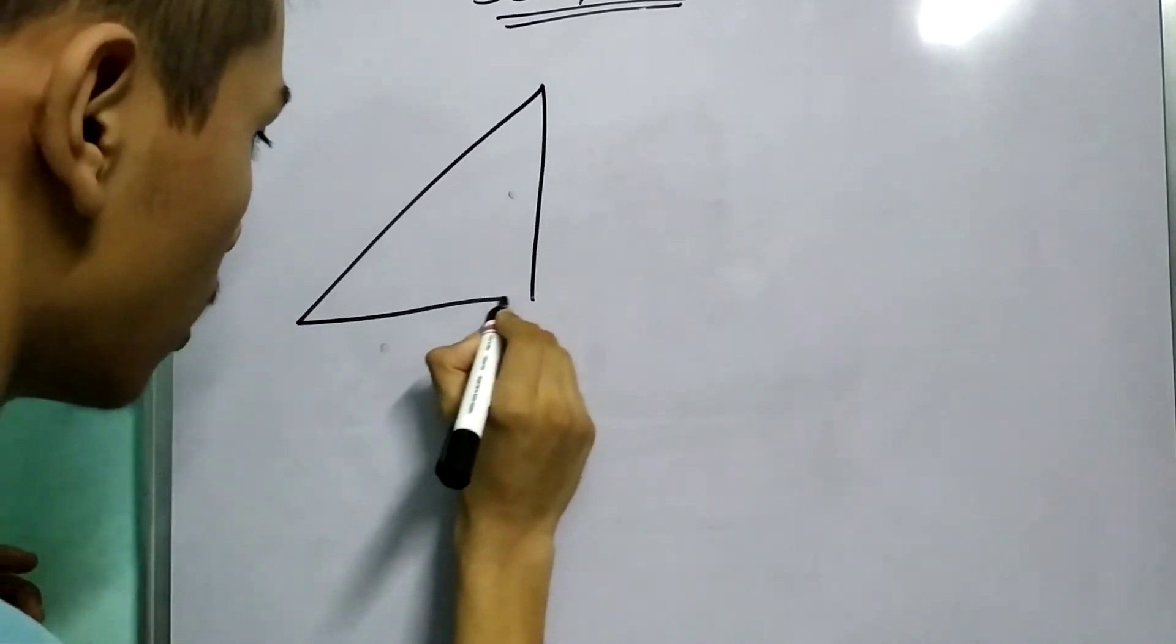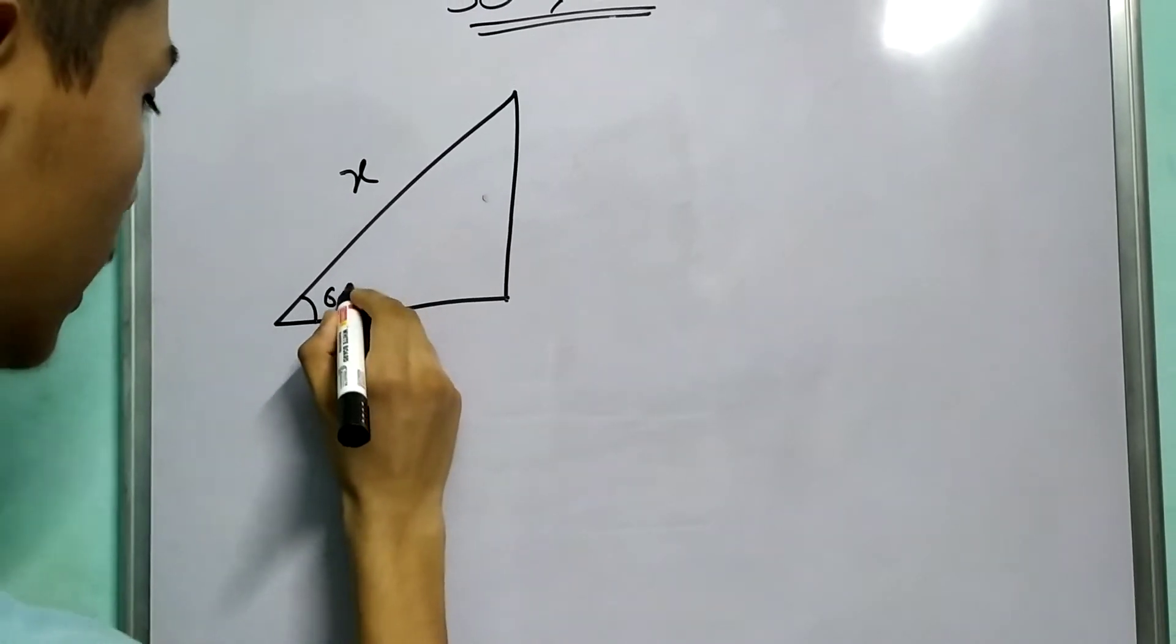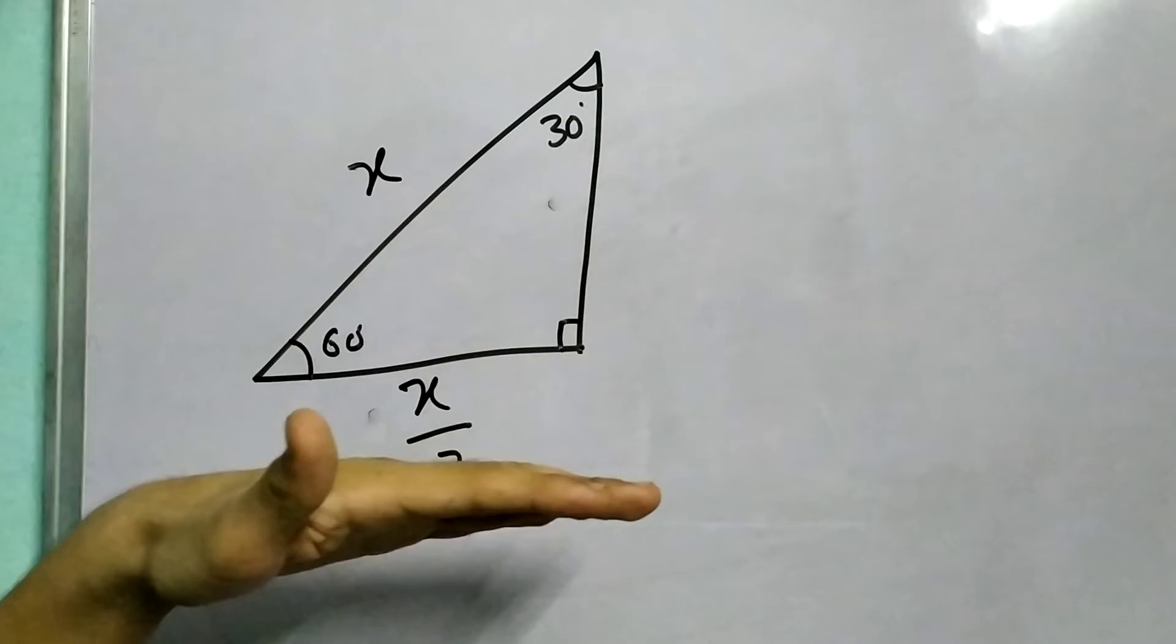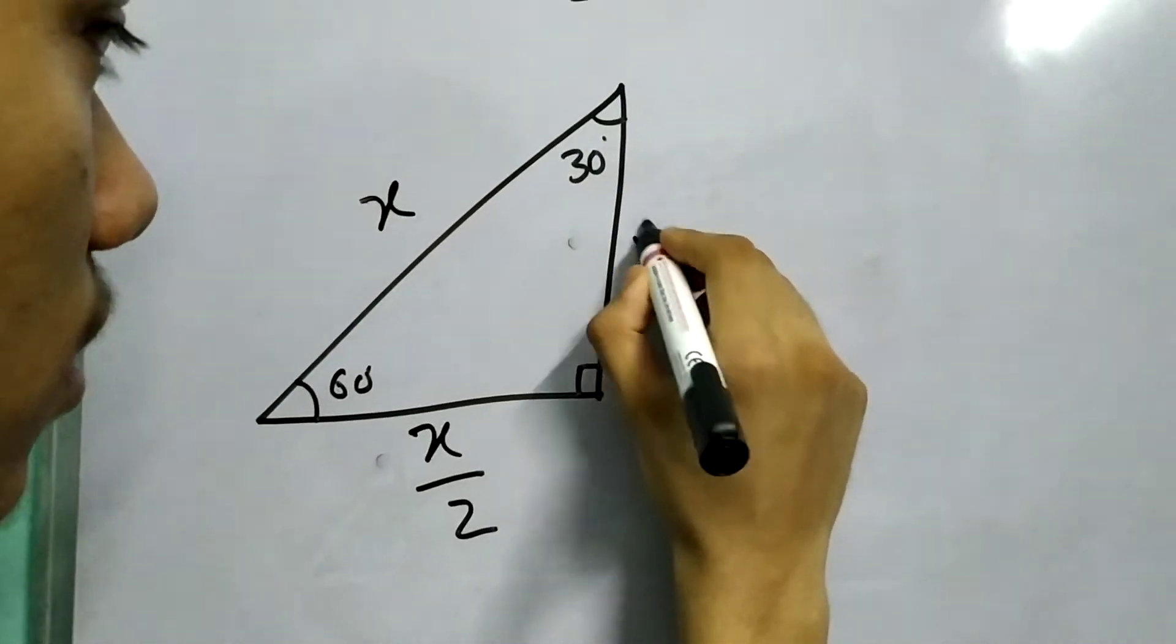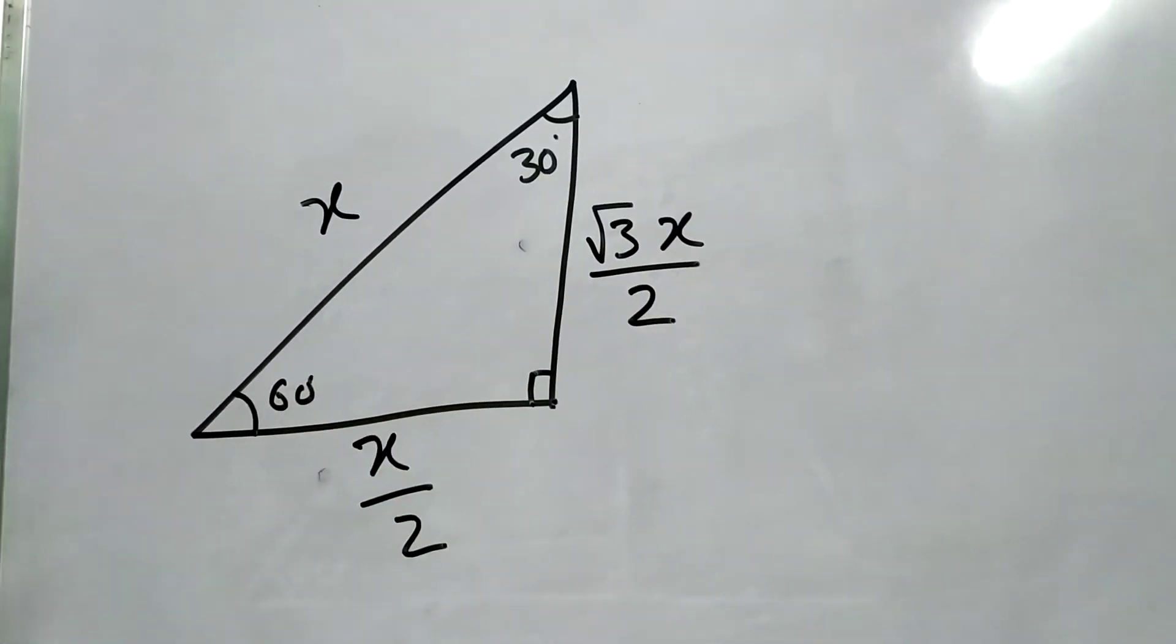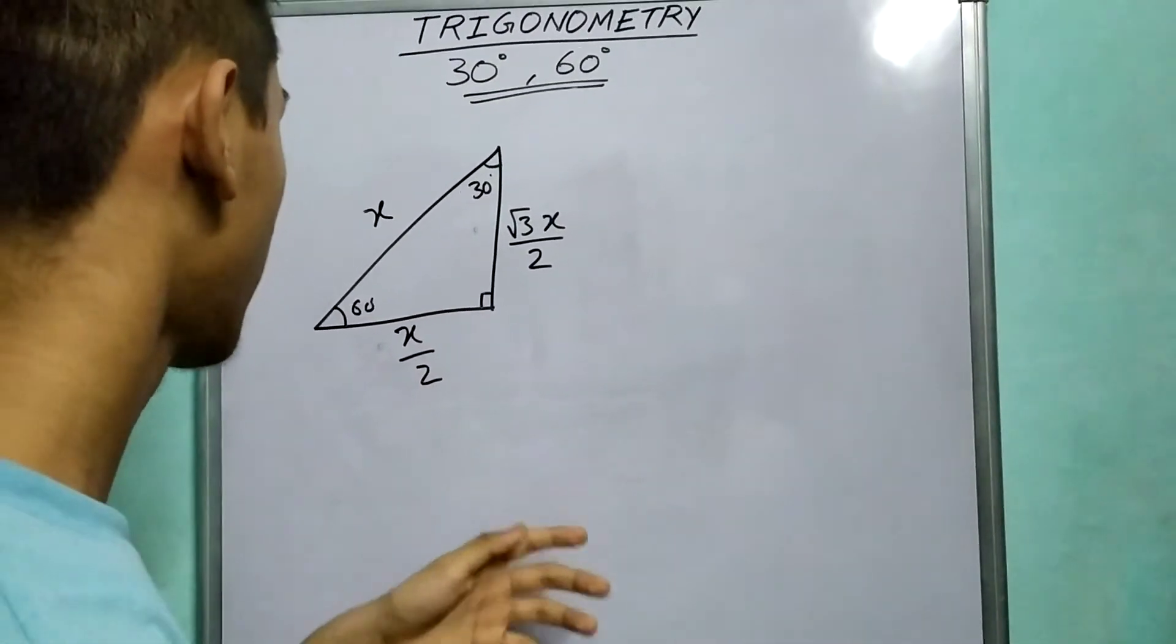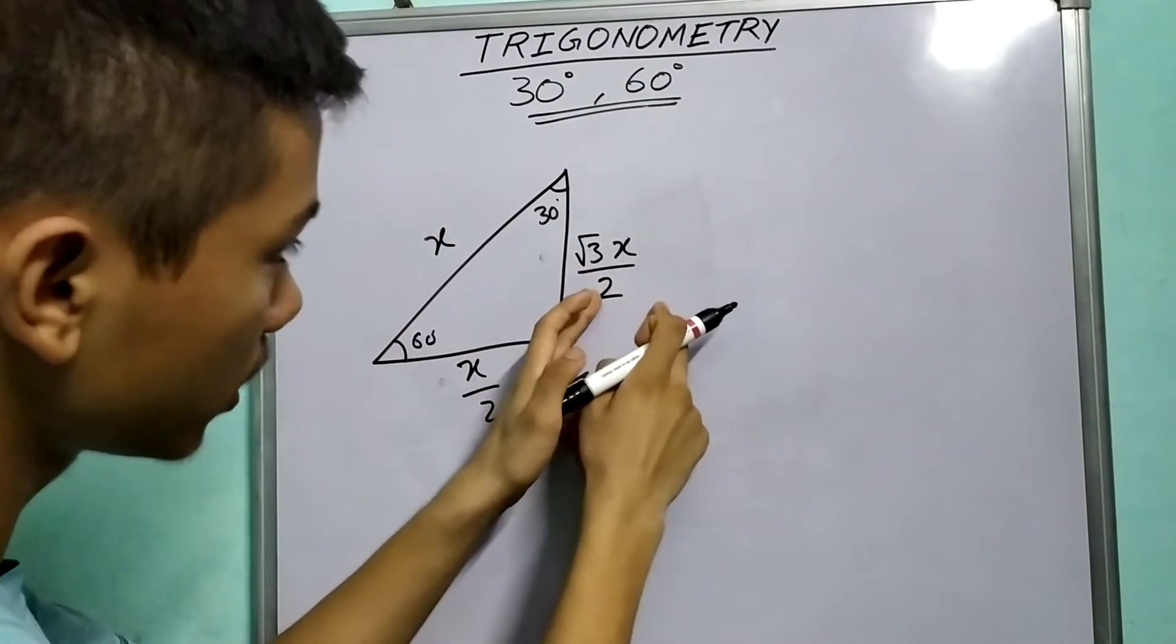And we have all the ratios required. So this is x, this is x by 2. This is 60 degree, this will be 30 degree. This will be 90 of course. So we have got two sides of our right angle triangle and we want to find the third side. Easy, right? You can use the Pythagoras theorem. So I am not going to do the entire derivation. I am just straight away going to write the thing. Okay? This side length will be root 3x by 2. You can do this yourself, right? Straight forward application of Pythagoras theorem.